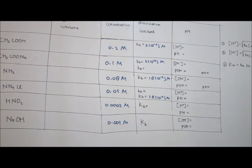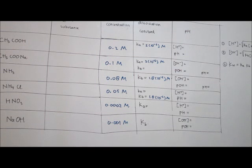Formula number one: concentration of H⁺ equals the square root of Ka times the concentration of the acid. This is used if the solution is acidic. Formula number two: concentration of OH⁻ equals the square root of Kb times the concentration of the base. This is used if the solution is basic or alkaline.